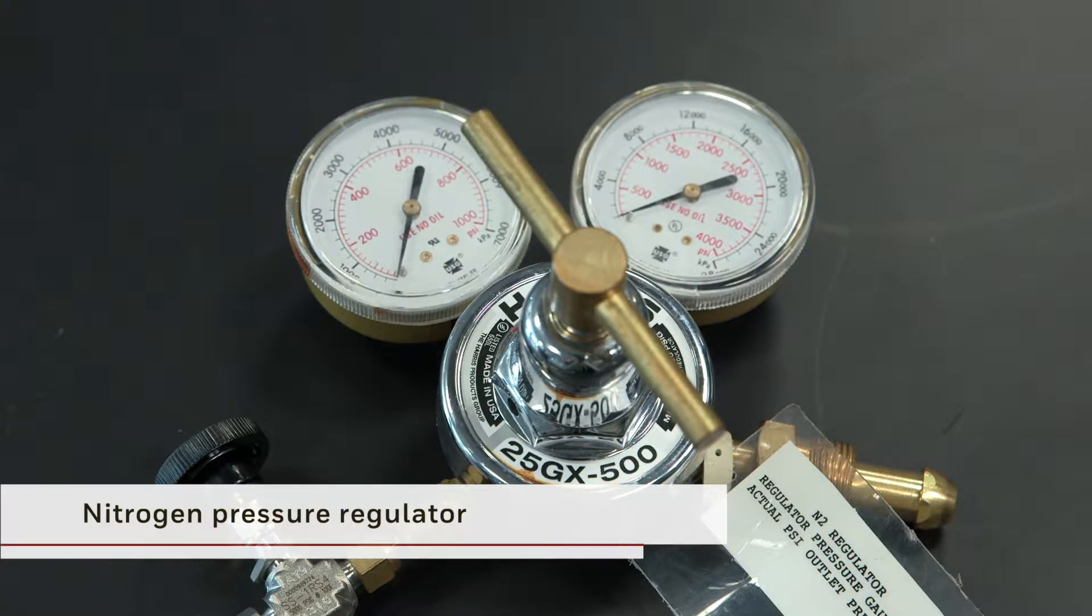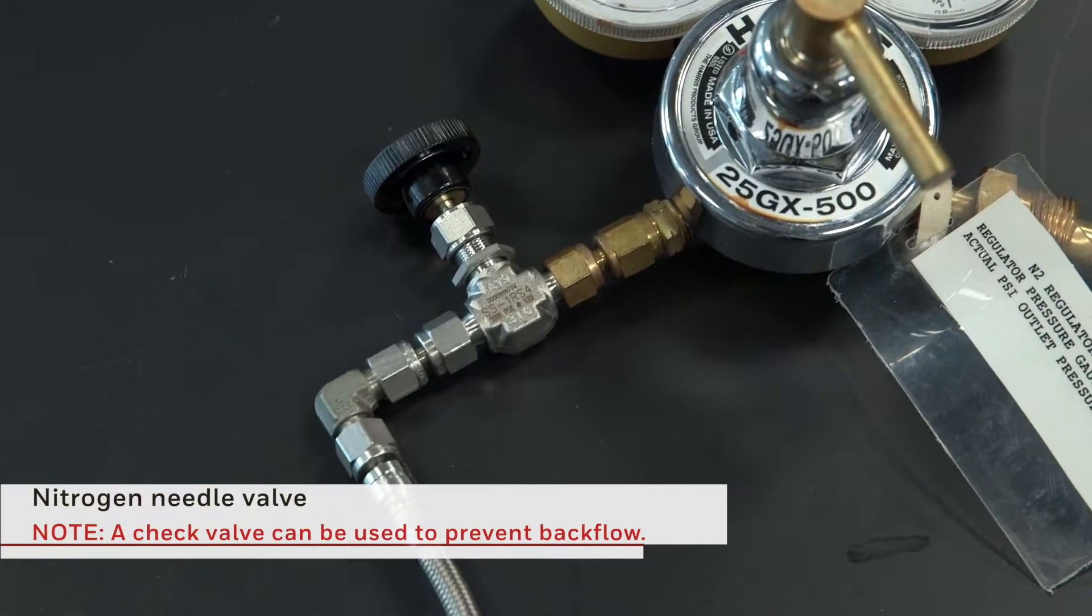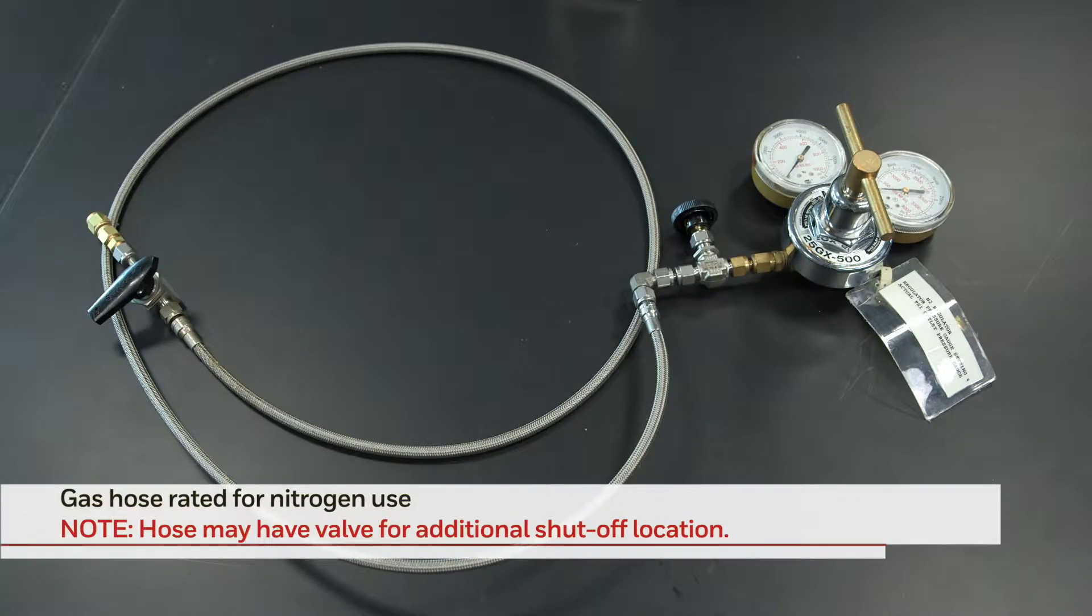You will also require a double-stage nitrogen regulator to set and monitor pressure levels. A nitrogen needle valve can be used to shut off the flow.